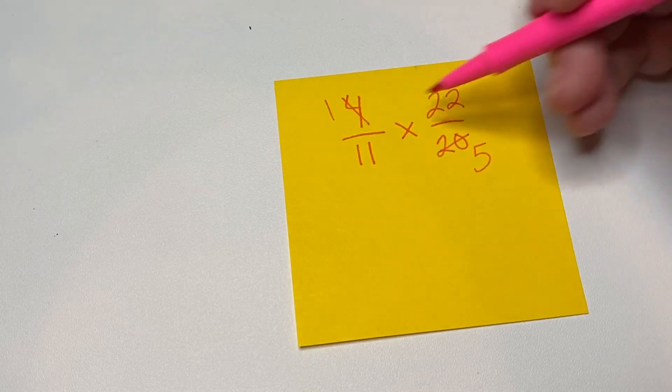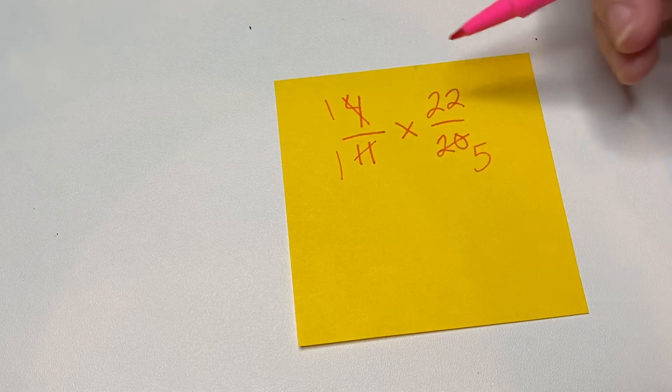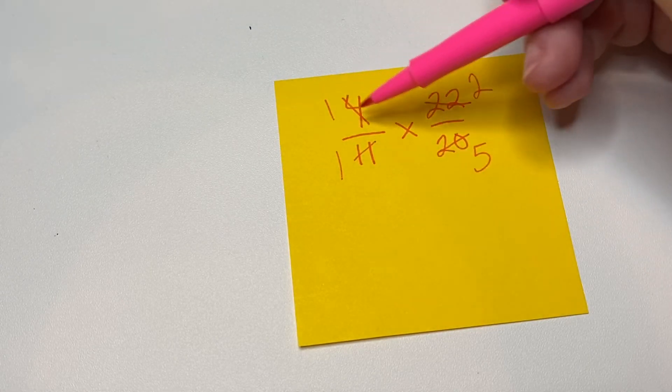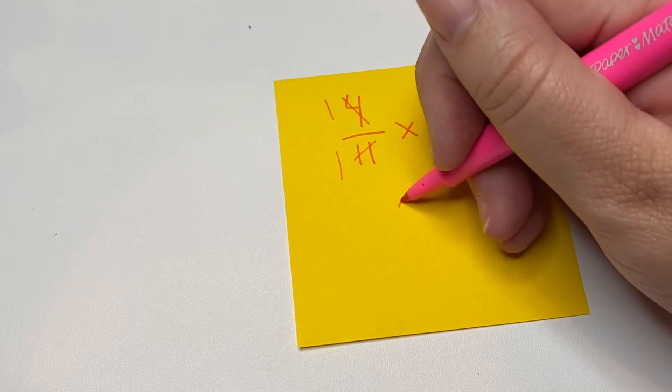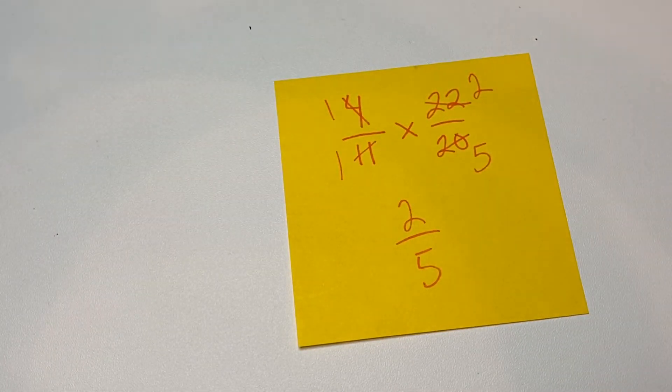Do these two share a factor? Yes, it's 11. 11 goes into 11 one time. And 11 goes into 22 two times. One times two is two. And one times five is five. So our answer is two fifths.